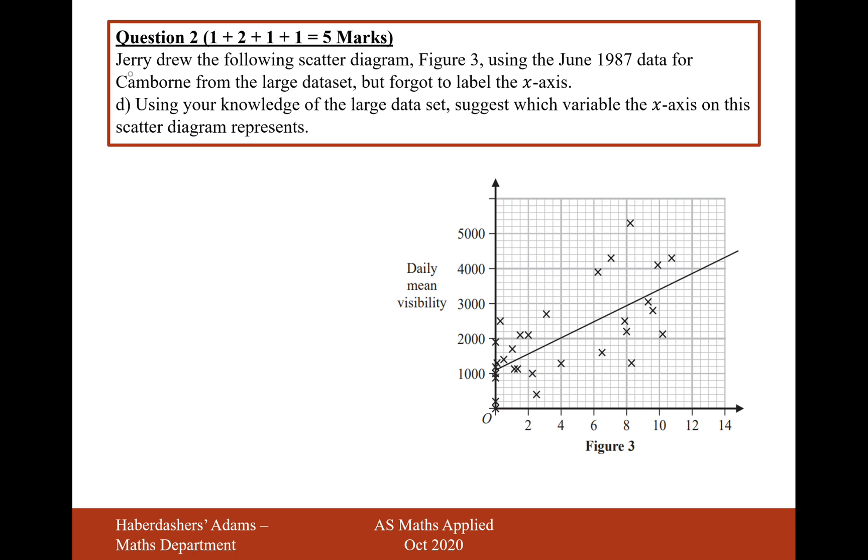And moving on to the final question. Jerry drew the following scatter diagram, Figure 3, using June 1987 data for Camborne from the large dataset, but forgot to label the x-axis. Using your knowledge of the large dataset, suggest which variable the x-axis on the scatter diagram represents. Well, it needs to be positively correlated with daily mean visibility. It's going to have lots of decimal values, so it's not integers. So it's nothing to do with cloud cover or anything like that. We know that's in oktas and that goes up to eight. So it's going to be positively correlated with visibility. I would say something like hours of sunshine is going to be the answer to this one here.